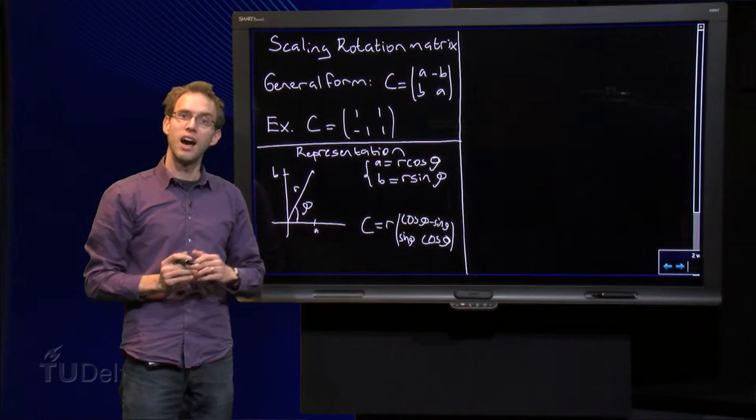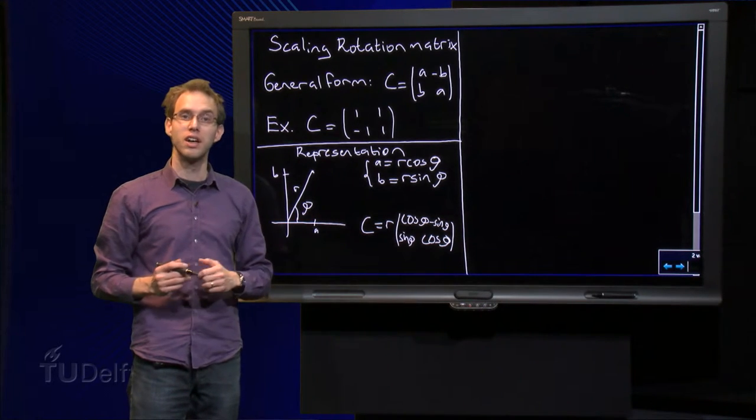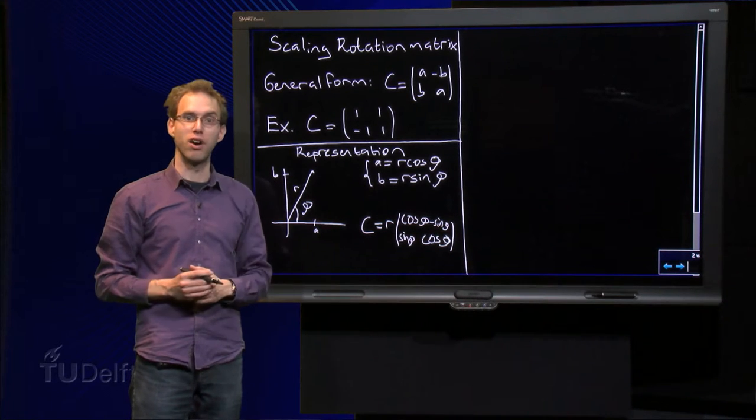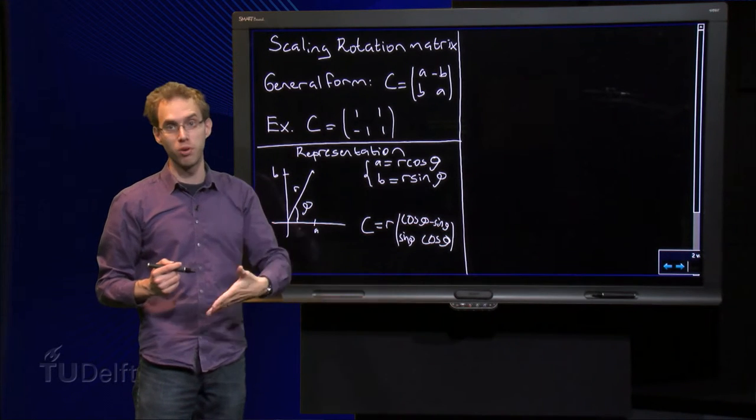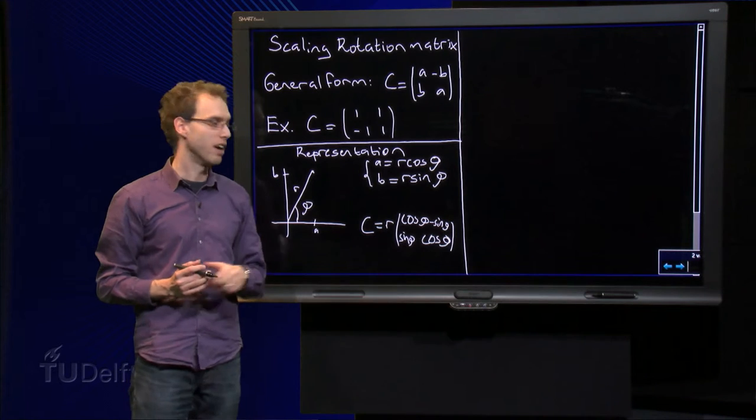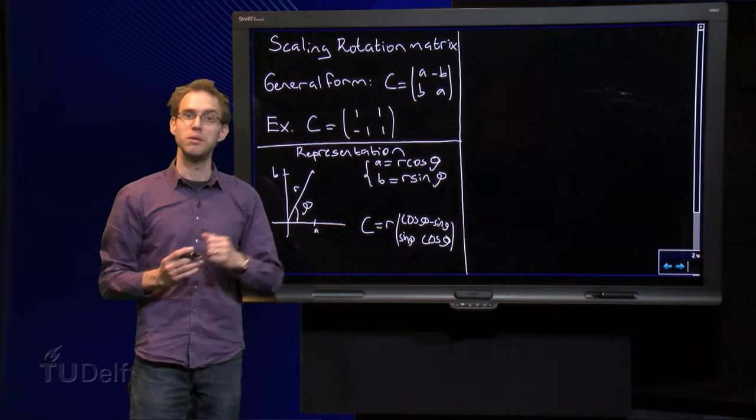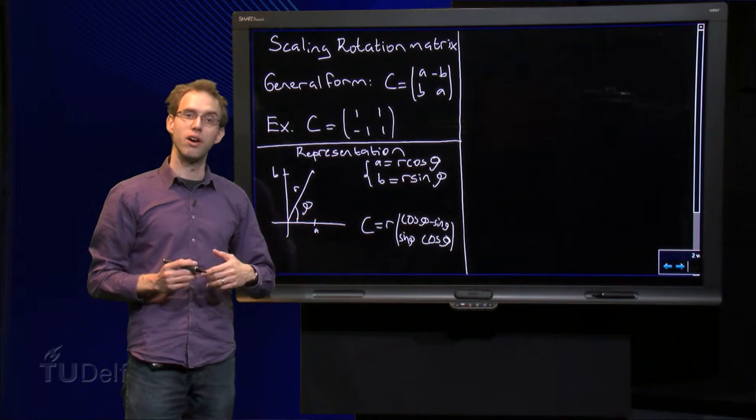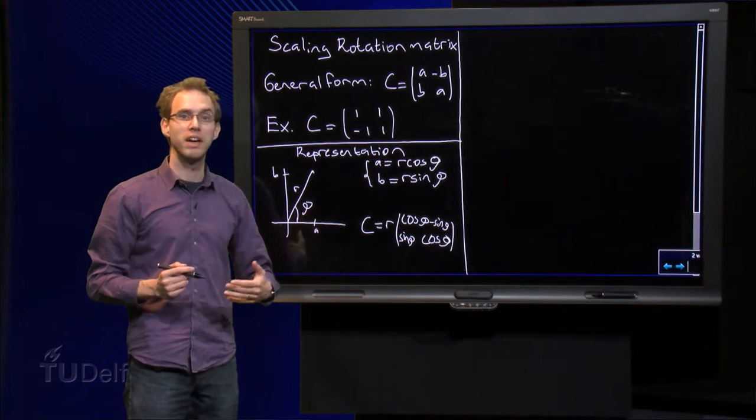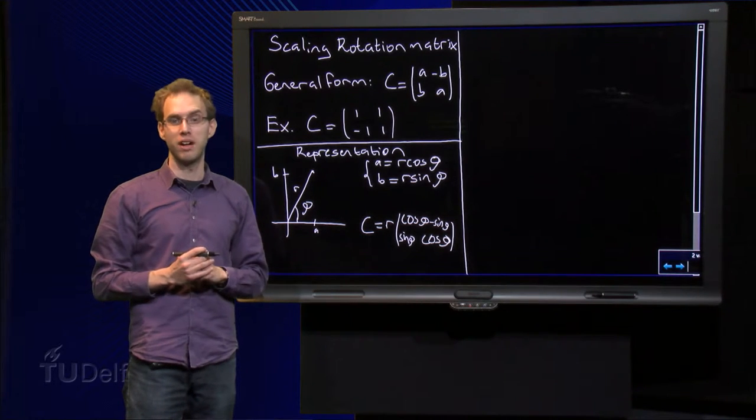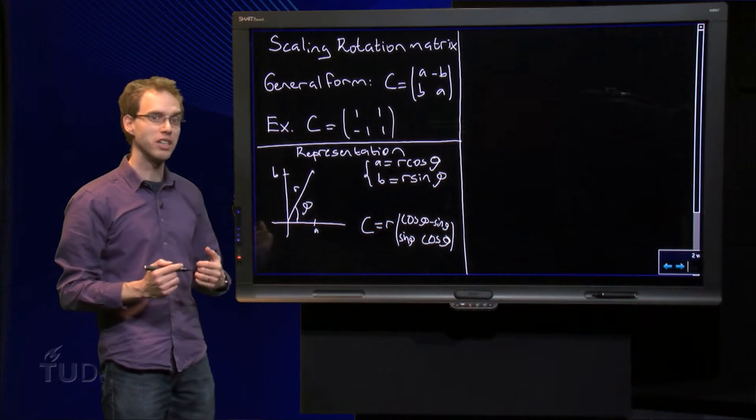But we now see how this C matrix acts on vectors. The R is just a scaling factor—it multiplies the length of a vector by a factor of R, makes vectors longer or shorter, depending on whether R is bigger than 1 or smaller than 1. And the matrix over there, with the cosine, cosine, sine and minus sine phi, we recognize this matrix—it is a rotation matrix. It rotates vectors through an angle of phi counter-clockwise. So what does C do? A C matrix scales vectors by a factor of R and rotates them by an angle of phi, and that is why a C matrix is called a scaling rotation matrix.